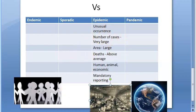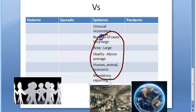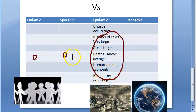In epidemic, the geographical area is larger. In endemic, the geographical area is small; in sporadic, it is also small. However, in epidemic it is slightly large, with a large number of cases. In epidemics, reporting becomes mandatory.